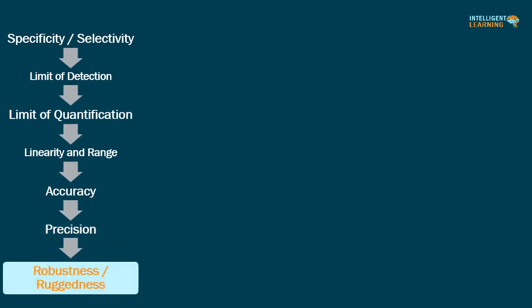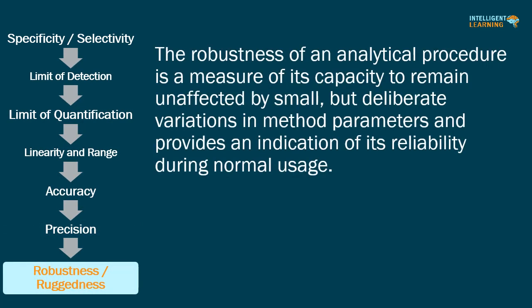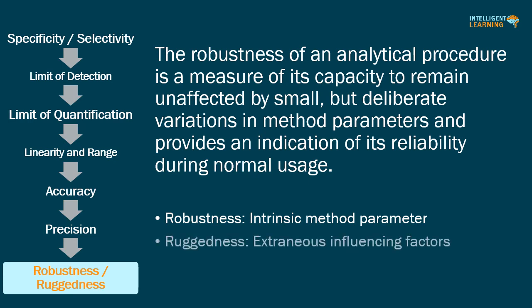The robustness of an analytical procedure is a measure of its capacity to remain unaffected by small but deliberate variations in method parameters, and provides an indication of its reliability during normal usage. Robustness expresses the stability of the method against small variations of intrinsic method parameters and variability of sample matrix. Ruggedness expresses the stability of the method against extraneous influencing factors. Some guidelines use robustness and some use ruggedness; when used together, these terms are treated as synonyms in most cases.